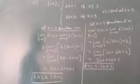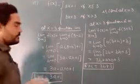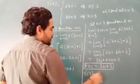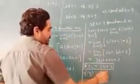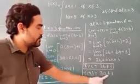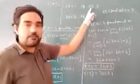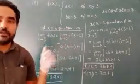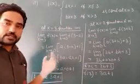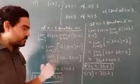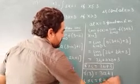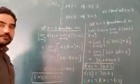Now we find the function value at x = 3. Since x = 3 satisfies x ≤ 3 (equal sign is there), we use the first function. So f(3) = a(3) + 1 = 3a + 1. Now because the function is continuous at x = 3, we set left hand limit equal to right hand limit equal to f(3).